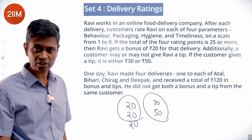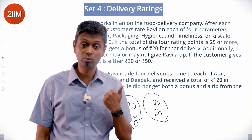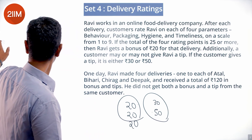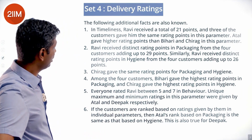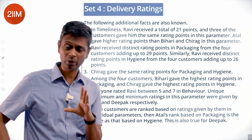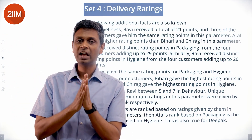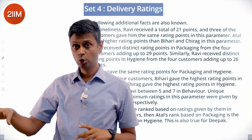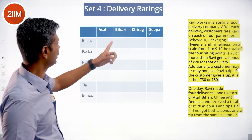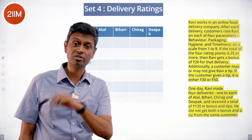He did not get both a bonus and a tip from the same customer, so for any given delivery he gets either a bonus or a tip, never both. Since there are four parameters and four customers, we set up a four-by-four grid. We'll track the total rating points per parameter, total points per delivery, and whether each delivery earned a tip or a bonus — capturing behavior, packaging, hygiene, and timeliness for Atal, Bihari, Chirag, and Deepak.